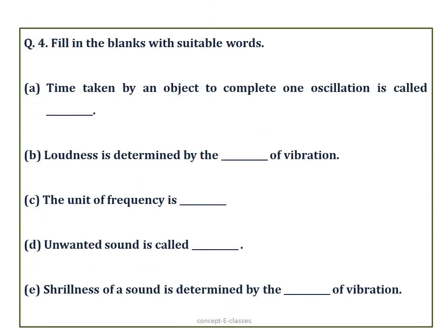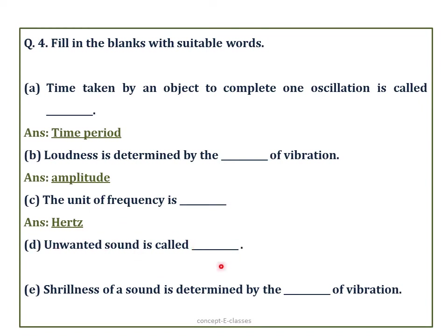Question number 4: Fill in the blanks. (A) Time taken by an object to complete one oscillation is called time period. (B) Loudness is determined by the amplitude of the vibration — loudness is directly proportional to the square of the amplitude. (C) Unit of frequency is hertz. (D) Unwanted or unpleasant sound is called noise. (E) The shrillness of the sound is determined by the frequency of the vibration.